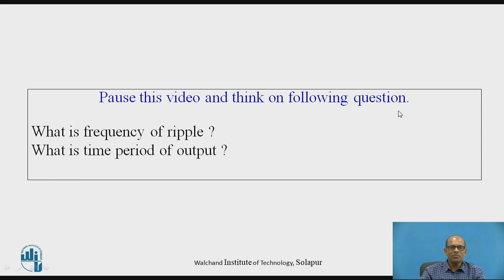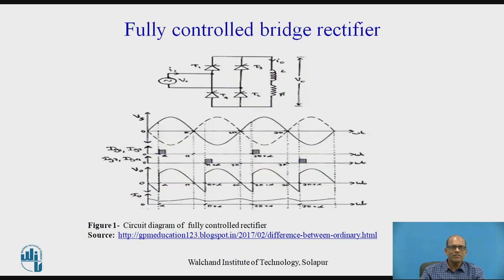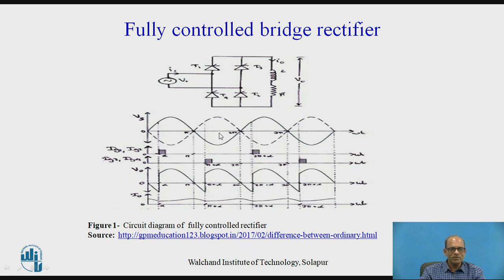Pause this video and think on the following questions: what is the frequency of ripple, and what is the time period of the output? To answer this, looking at the waveform, the frequency of ripple means the frequency of output. This is one cycle of input, so the time period of input is 2π. The segment from α to 2π plus α is repeated again from π plus α to 2π plus α — meaning the period of the output is π. Within one cycle of input, two cycles of the output are completed, therefore the frequency of ripple is twice the frequency of input. If the input is 230V, 50 Hz, then the frequency of ripple, that is the frequency of output, is 100 Hz.